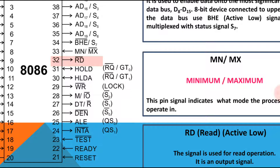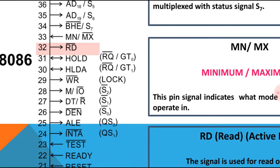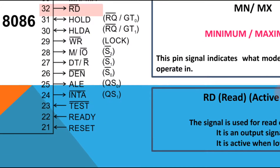Next are DEN (Data Enable, pin 26) and ALE (Address Latch Enable, pin 25). On the multiplexed bus, during T1 address is available, and from T2 to T4 data is available. When DEN is enabled, the system bus contains valid data. When ALE (pin 25) is enabled, the system bus contains valid address.